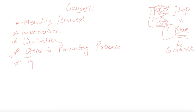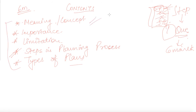We will also learn about the types of plan. So these are the five topics we are going to cover under this chapter. This chapter carries a six-mark question, so it is very important. Only five questions need to be covered, and one we have already covered. The remaining four are very simple — importance, limitations, steps in planning, and types of plan are all straightforward once you know the meaning.